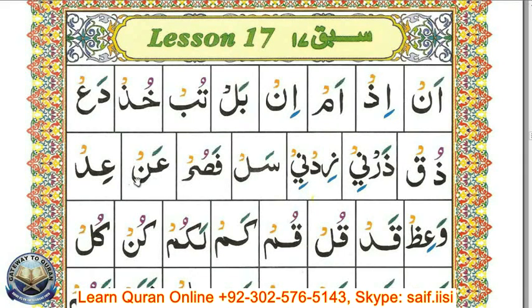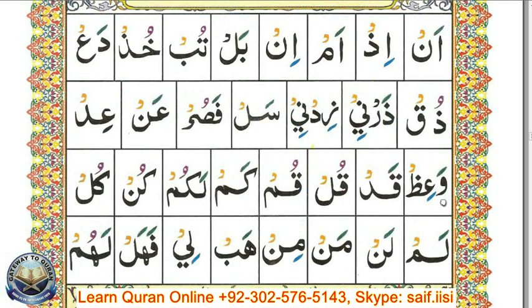عين نون فتح — عن. عين دال كسر — عيد. واو فتح — و. عين ظا كسر — عيد. واعظ.